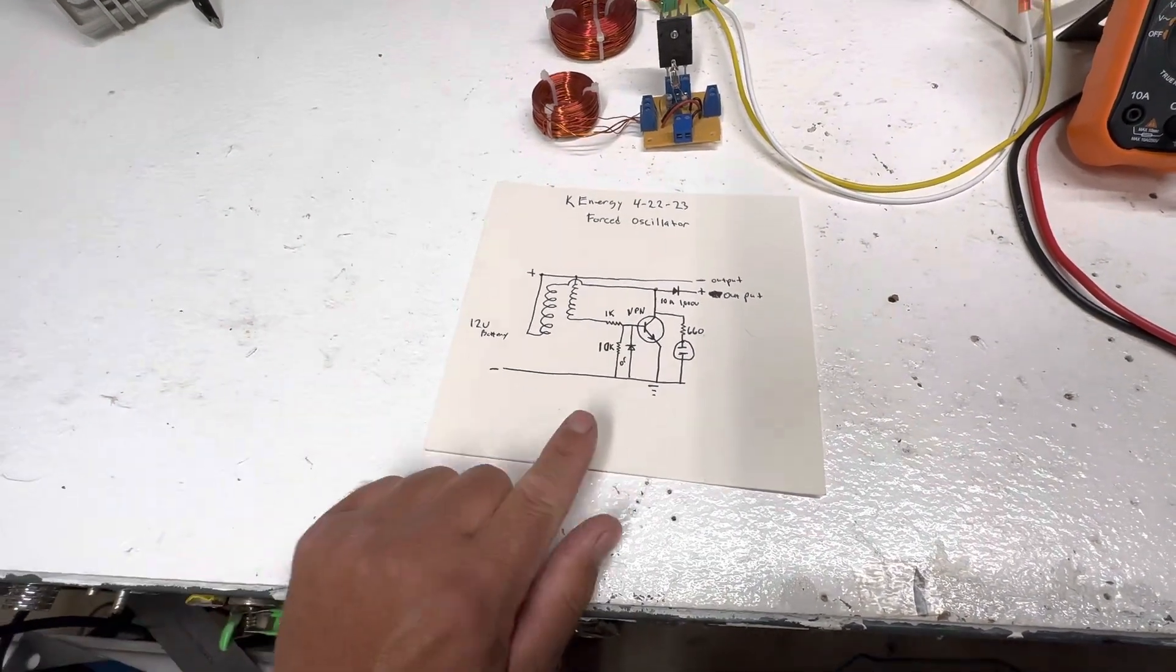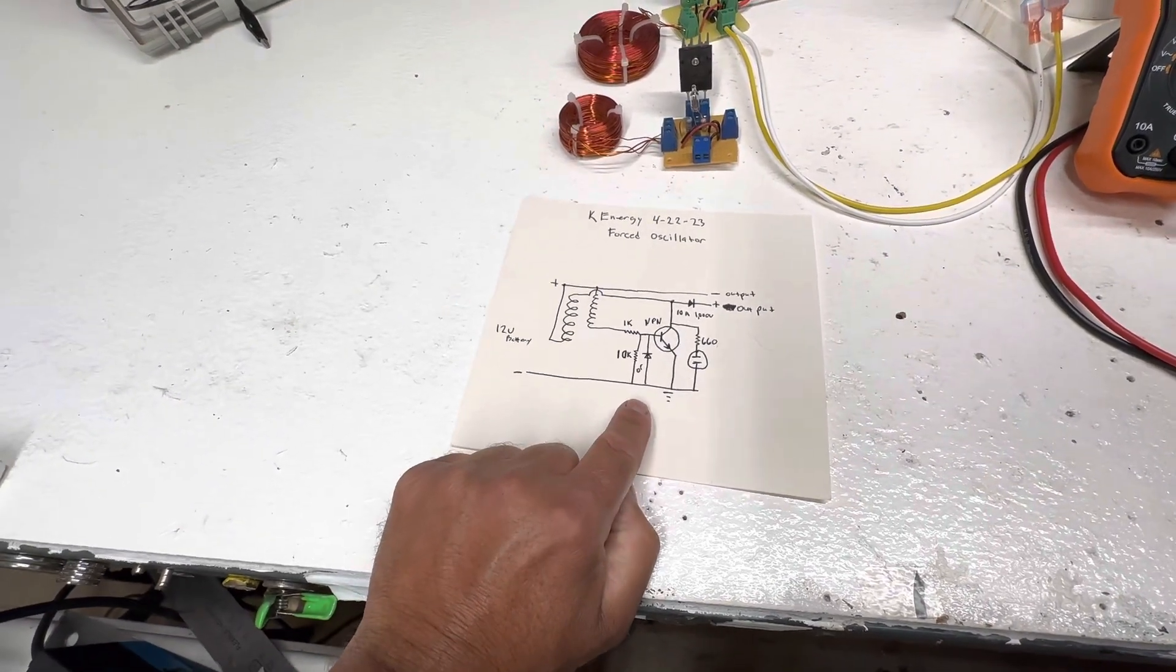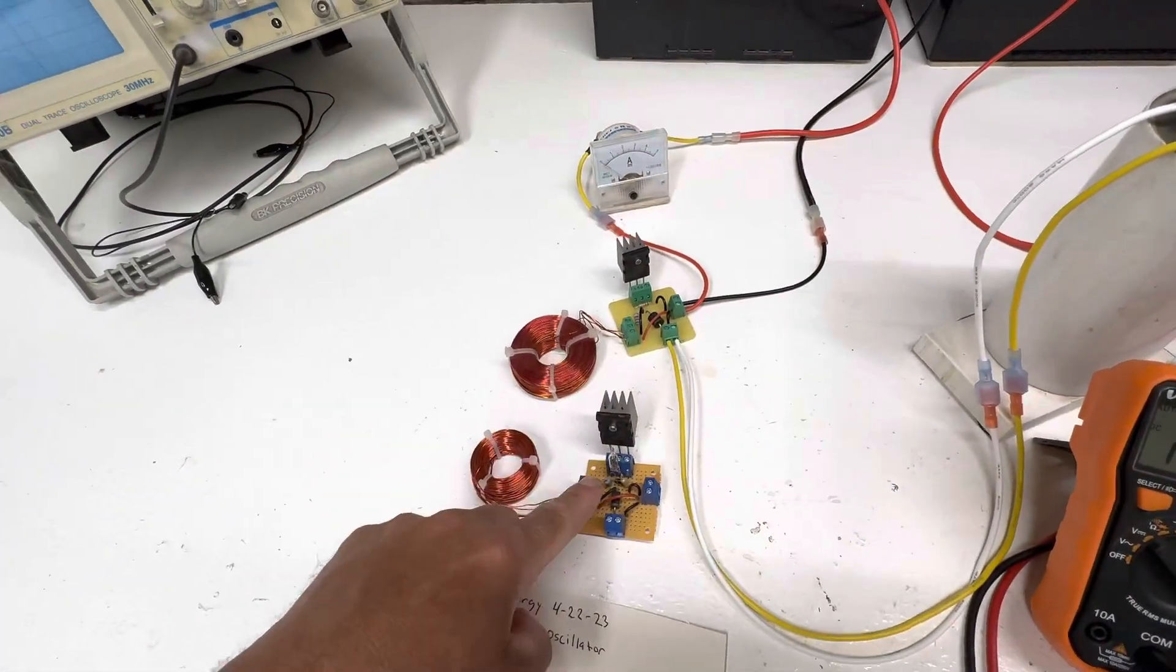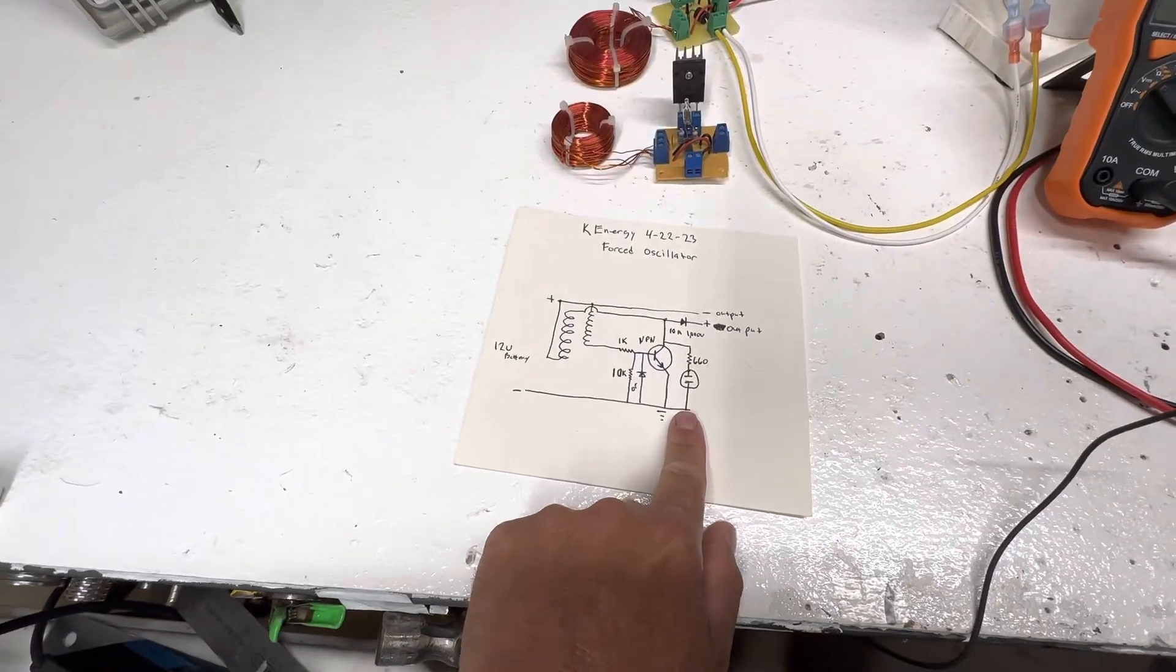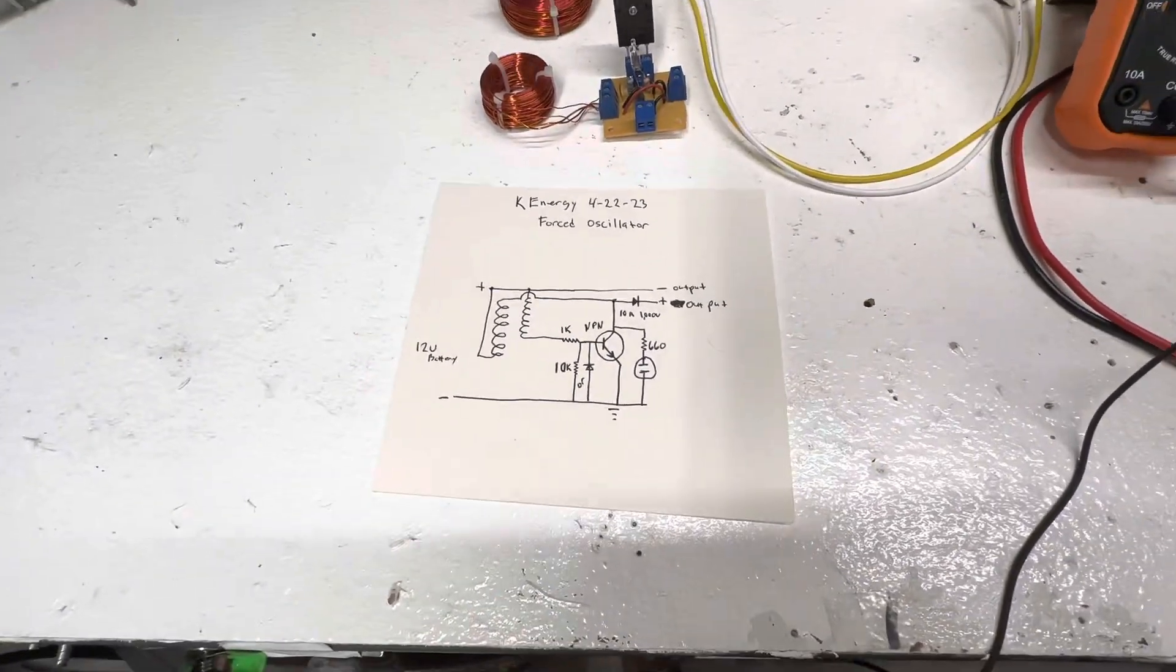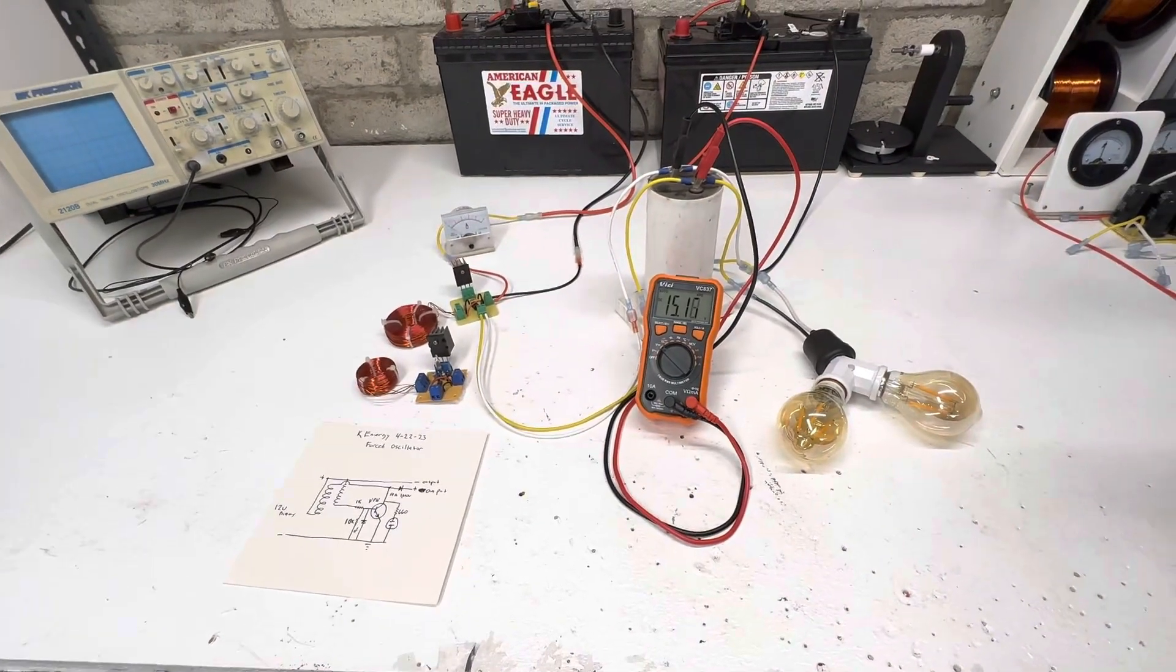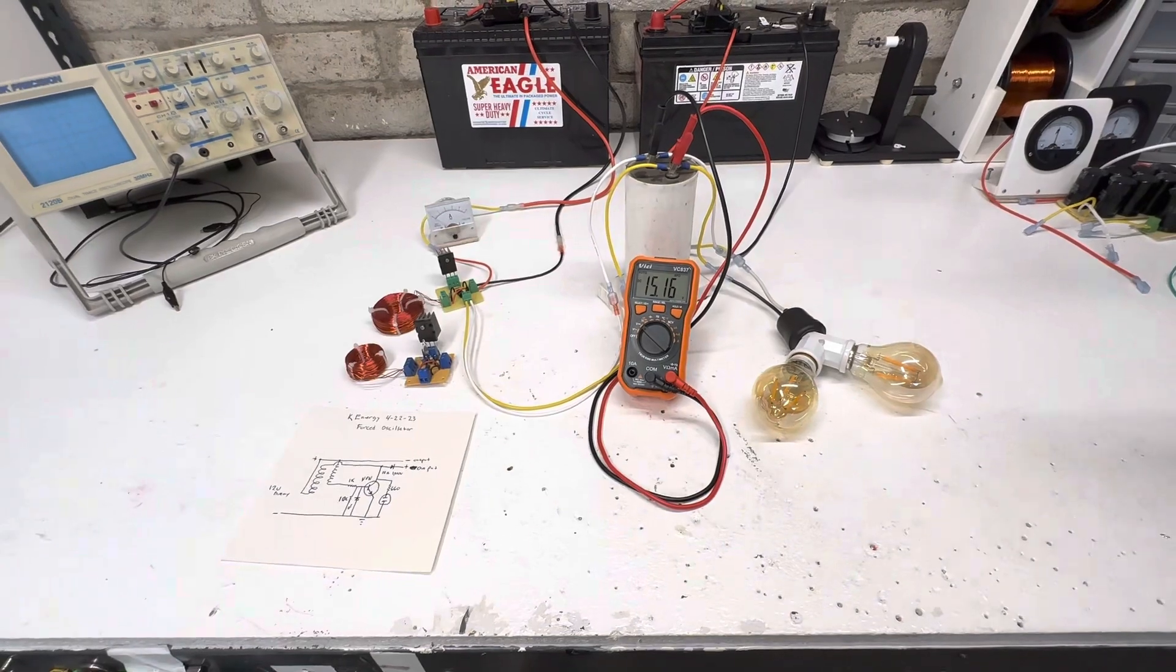You could do a 10k resistor or a diode. Like this one I'm running right now has no diode. This one has a diode and a little neon, which is right here in the circuit. So I also had some questions about running 120 volt light bulbs, so that's what we're going to do today.